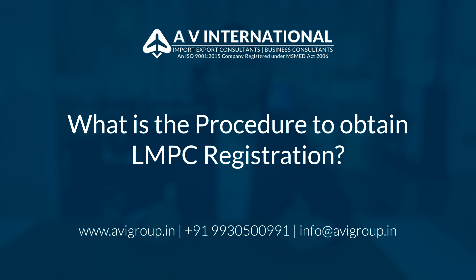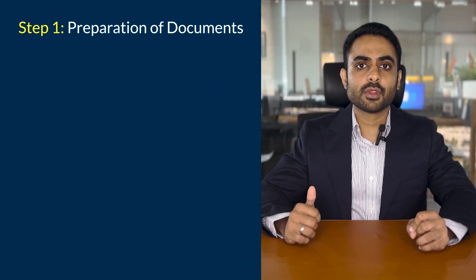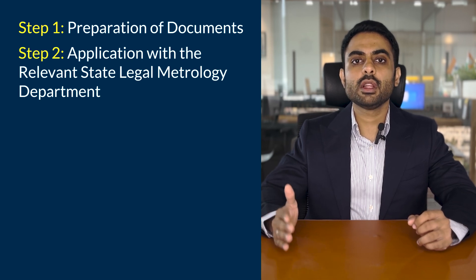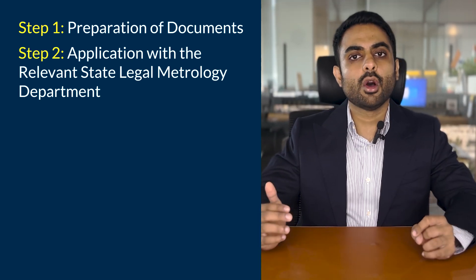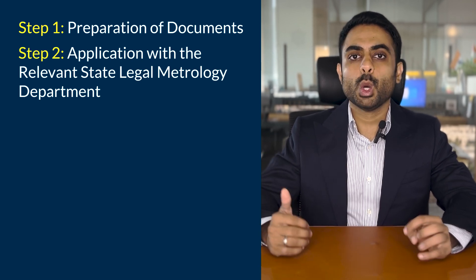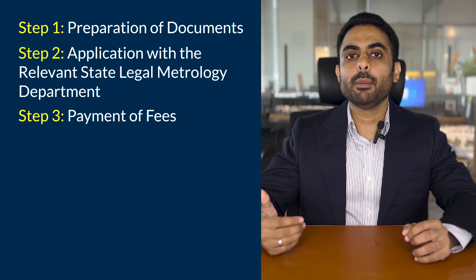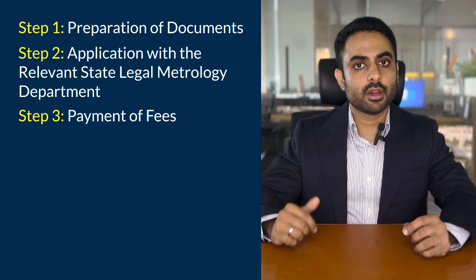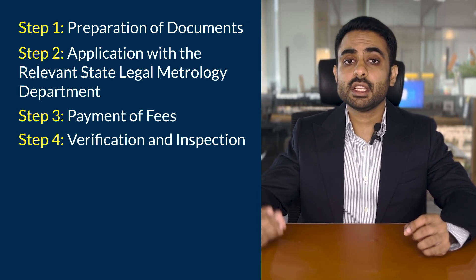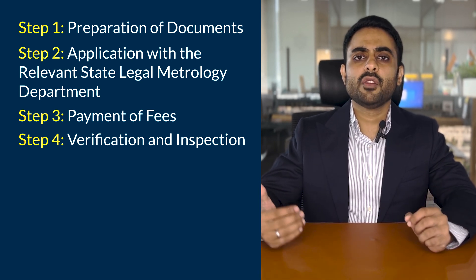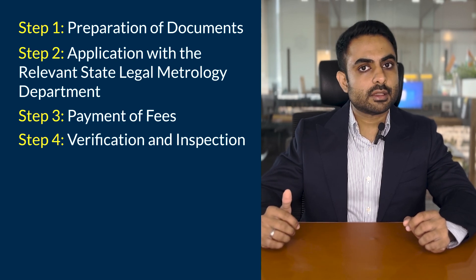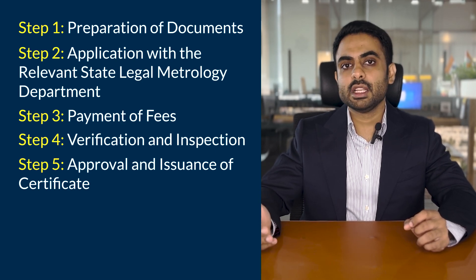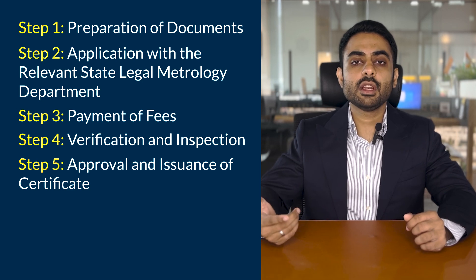What is the procedure to obtain LMPC registration? Step 1: Preparation of documents — gather the necessary documents discussed earlier. Step 2: Application with the relevant state legal metrology department — submit the documents along with a duly filled and signed form. Step 3: Payment of registration fee — pay the fee as prescribed by the state government; currently the registration fee is Rs. 500. Step 4: Verification and inspection — the authorities may conduct a physical verification and inspection of your industrial premises. Step 5: Approval and issuance of certificate — if your application complies with the regulations, the authorities will approve your registration and issue an LMPC certificate.